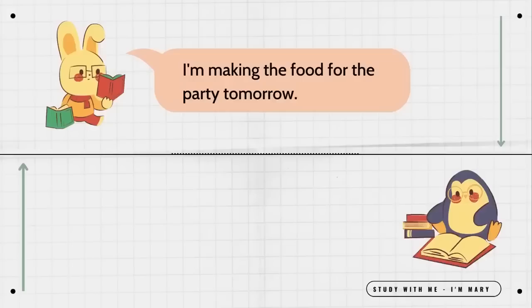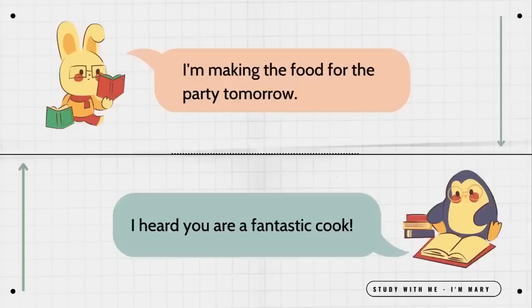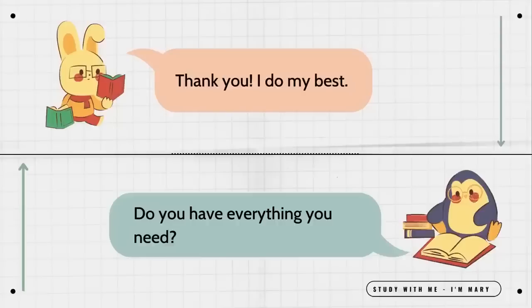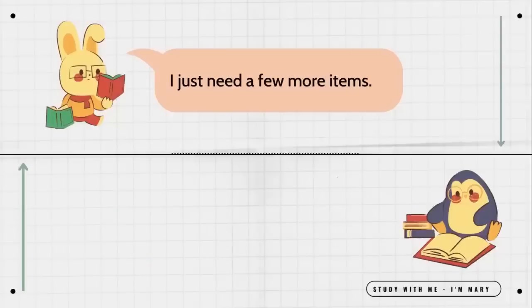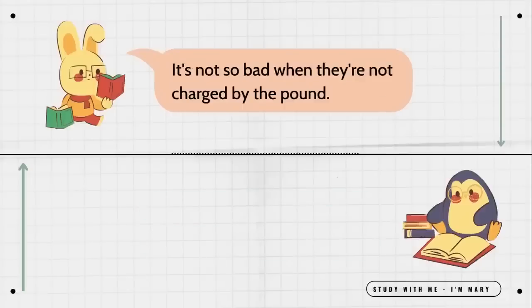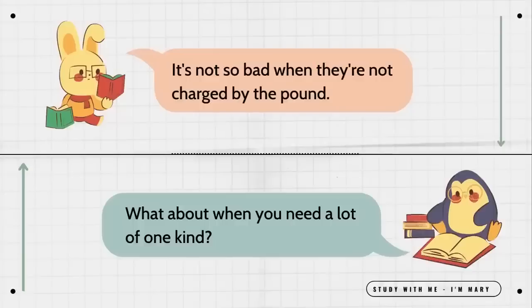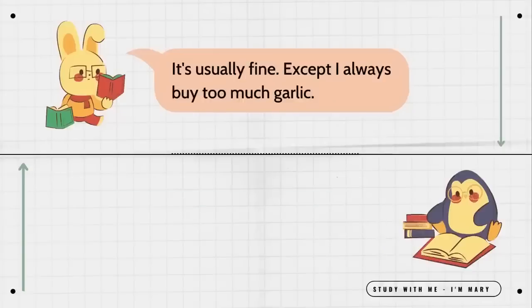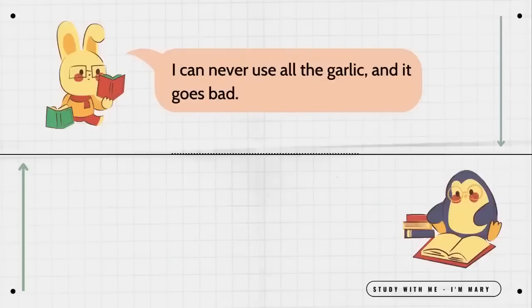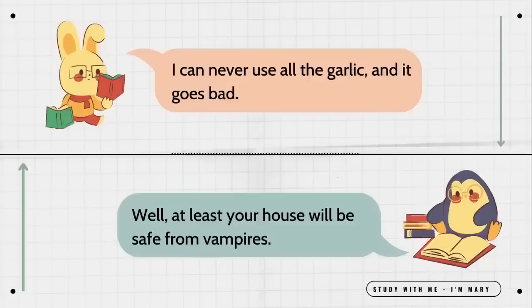I'm making the food for the party tomorrow. I heard you are a fantastic cook. Thank you. I do my best. Do you have everything you need? I just need a few more items. Vegetables are so expensive. It's not so bad when they're not charged by the pound. What about when you need a lot of one kind? It's usually fine, except I always buy too much garlic. It's because the packages sell five heads instead of one. I can never use all the garlic, and it goes bad. Well, at least your house will be safe from vampires.